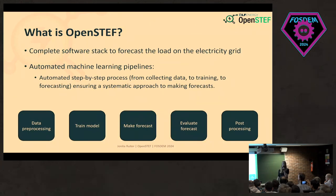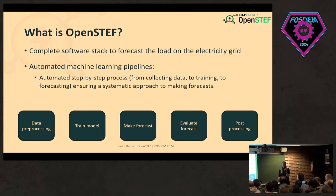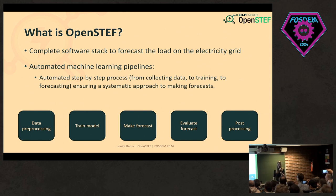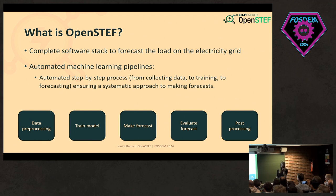First of all, what is it? Well, it's a complete software stack to forecast the load on the electricity grid — but it's an energy forecast, so it could also do it for heat. It uses automated machine learning pipelines: a step-by-step process which is automated to make a forecast. In these dark blue boxes is everything that OpenSTEP can do.